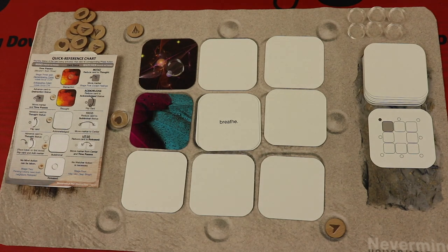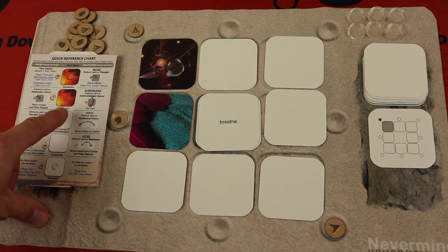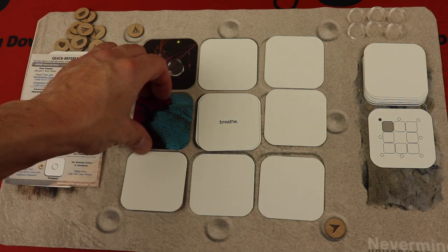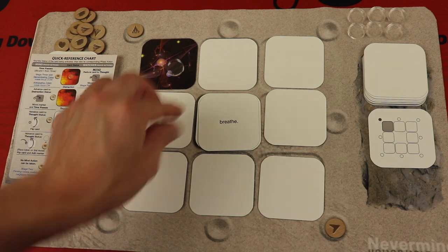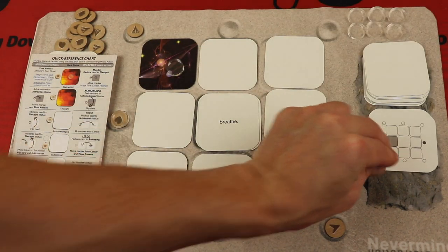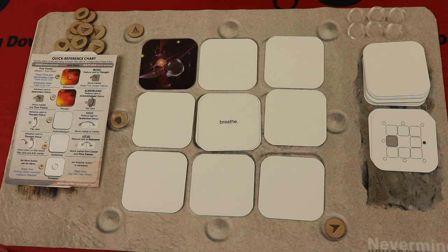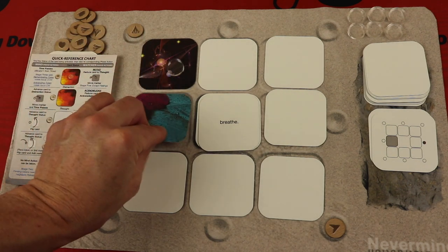But we might be able to do this one, for example. And right now it is a thought, and so essentially we're going to reduce that card from a thought to acknowledged. So essentially we're just going to flip it over. That would be the mind's turn. Flip over the mind card. Oh my gosh, they just redid the one that we did. So it was acknowledged, and so they're going to move it right back to a thought. That was just bad luck right there.